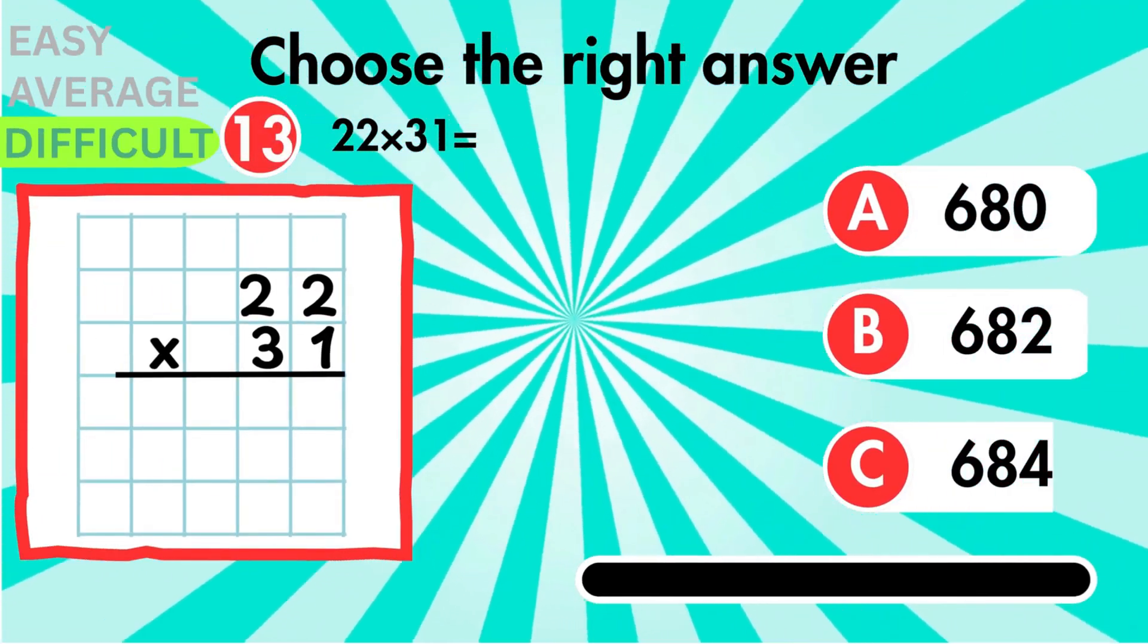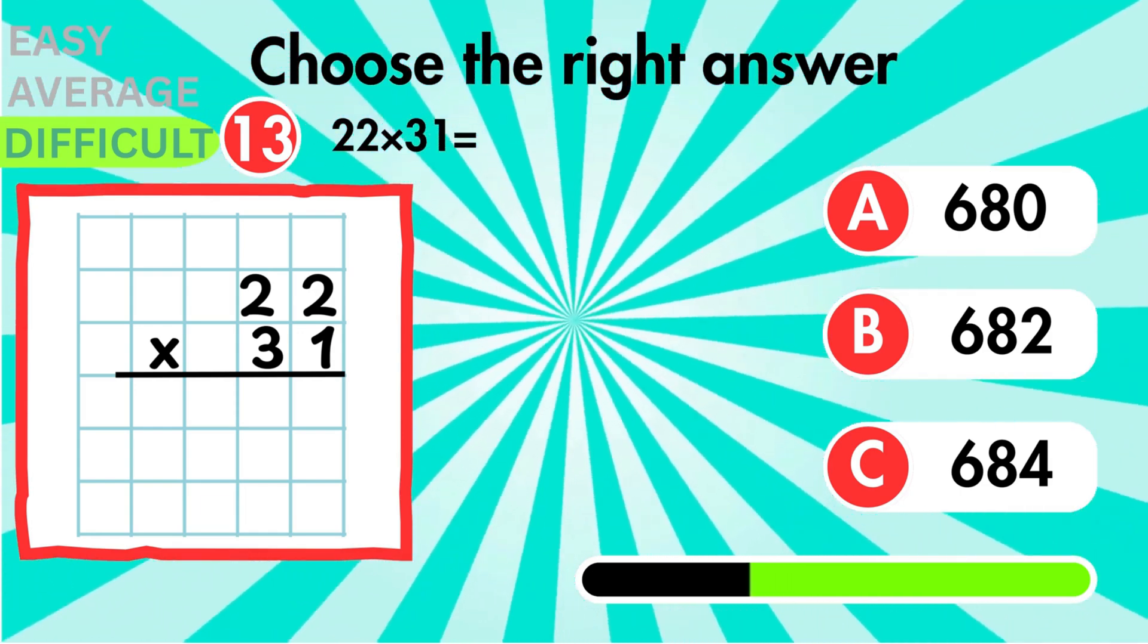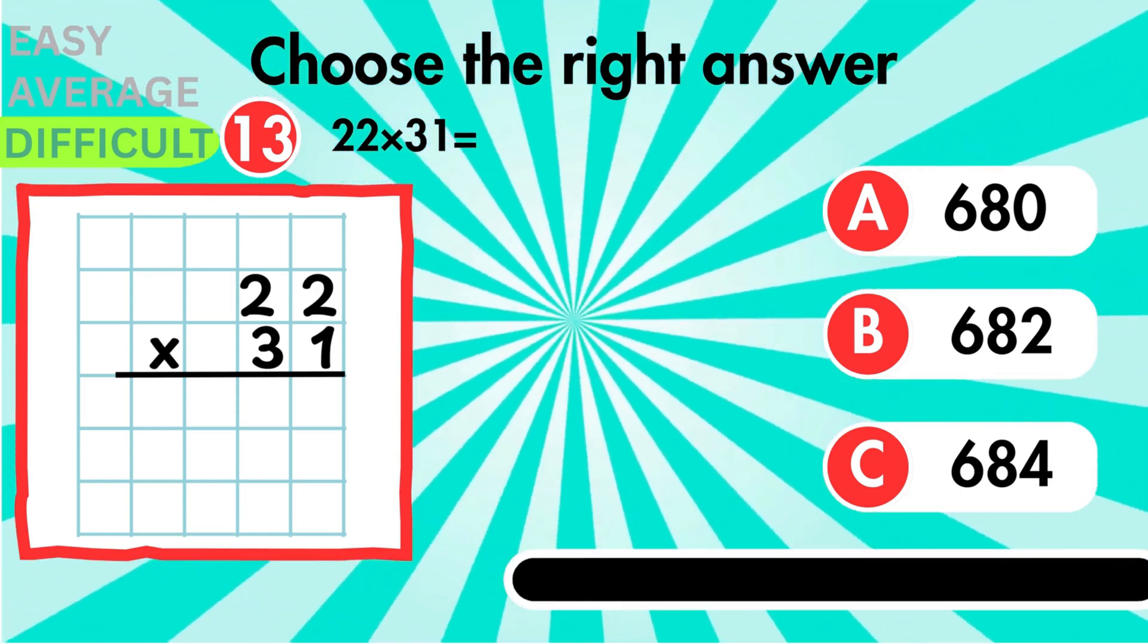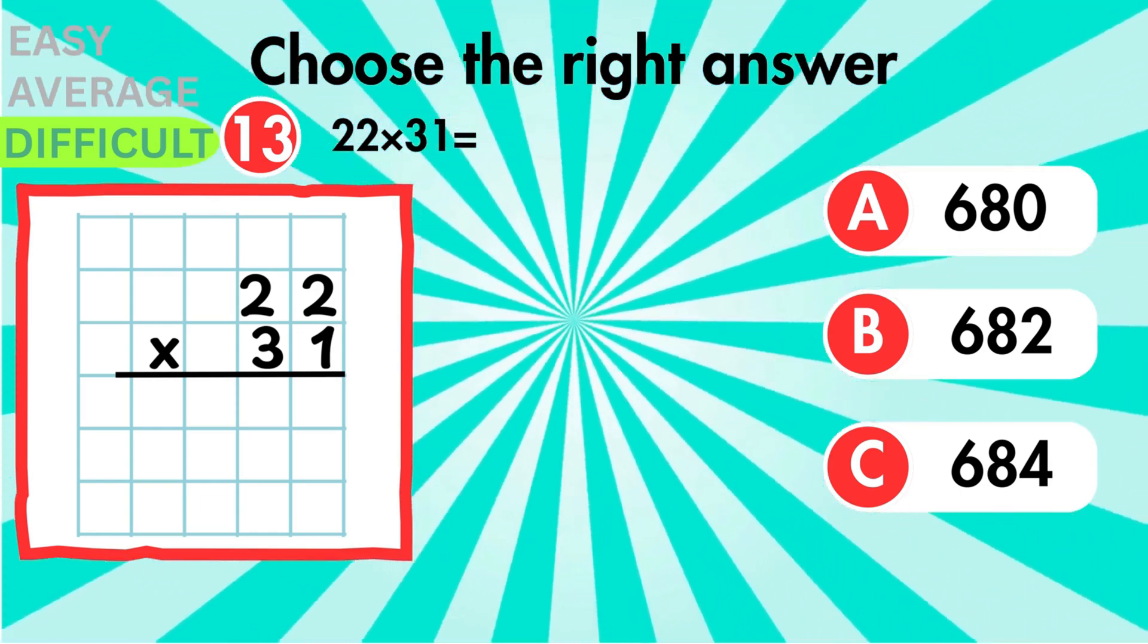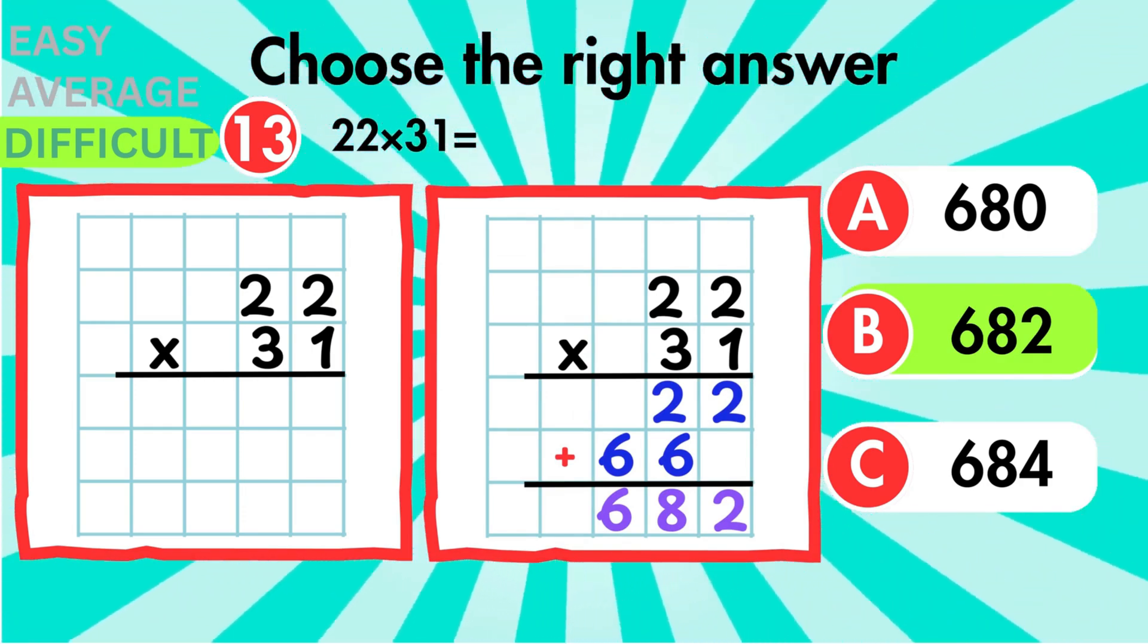Let's multiply 22 by 31. Ensure your place values are correct for both steps. The total is 682.